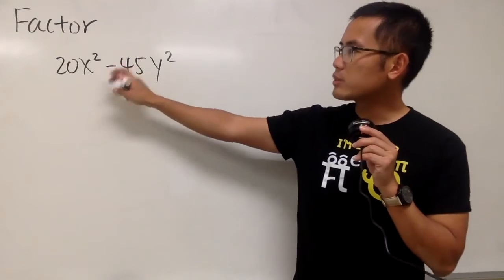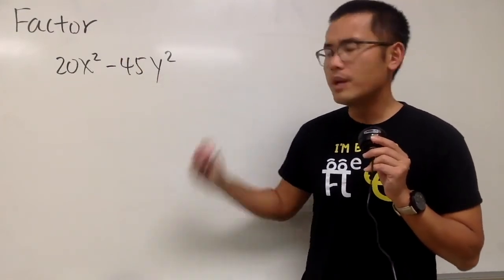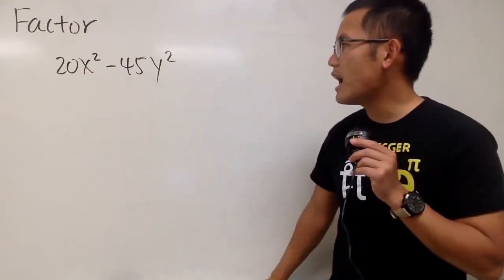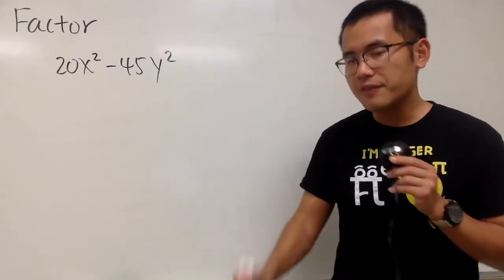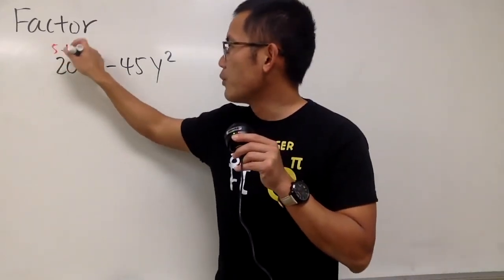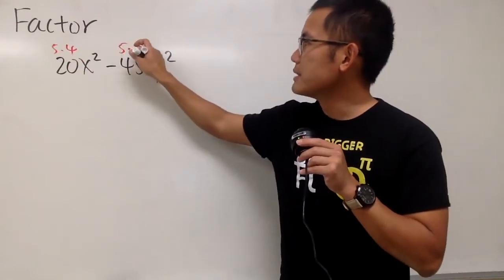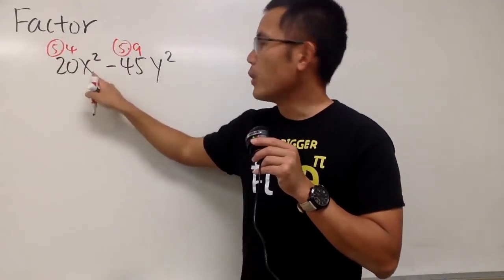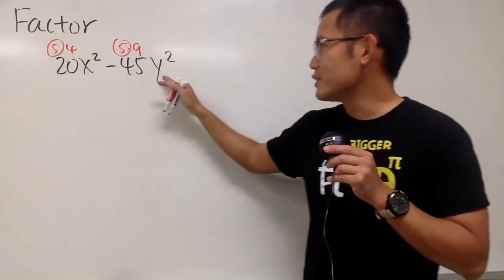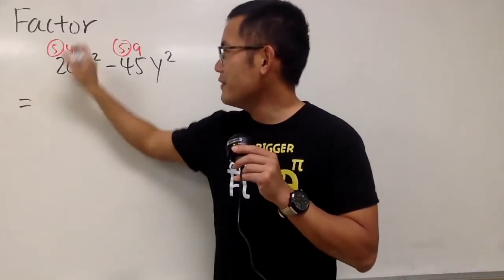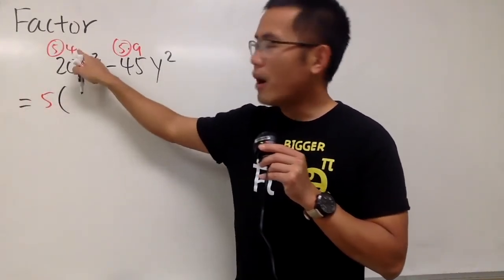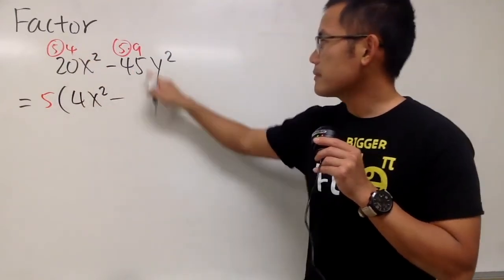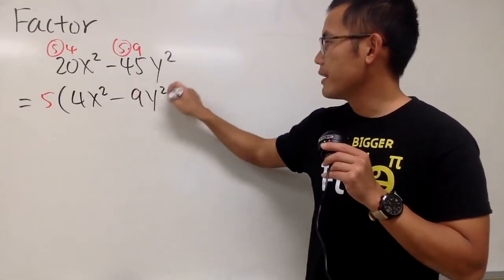Here we will factor 20x squared minus 45y squared. Deal with the numbers first: 20 and 45. What do they have in common? The 5 — because 5 times 4 is 20 and 5 times 9 is 45. So the 5 is in common. Factor out the 5, leaving 4x squared minus 9y squared.